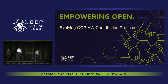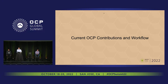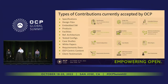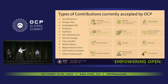So let's go ahead and kick things off. First, I want to take a look at the current OCP contributions and workflow so we can understand the process as it currently stands. OCP currently accepts 12 different types of contributions — a variety of contributions all the way from hardware, software, documents, case studies, even all the way down to OCP-centric content such as videos or client testimonials.